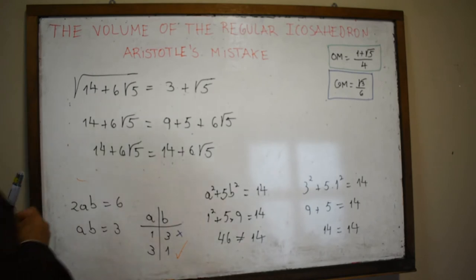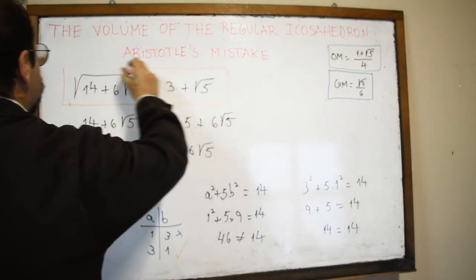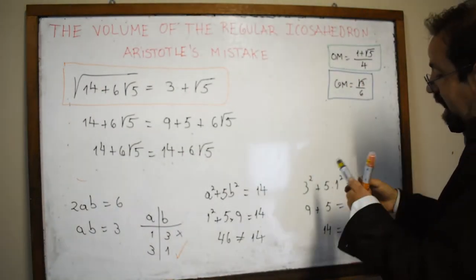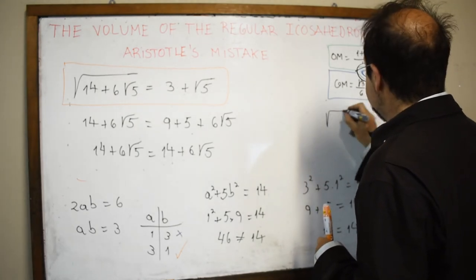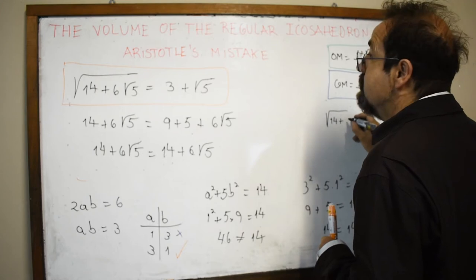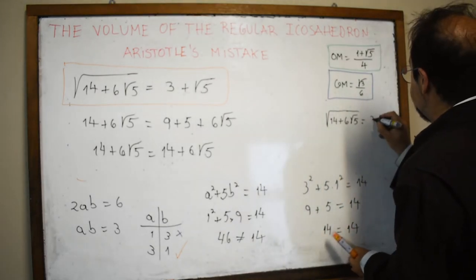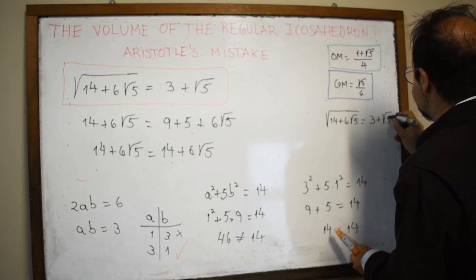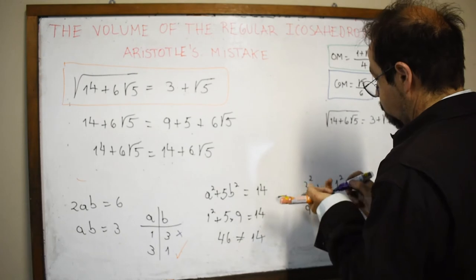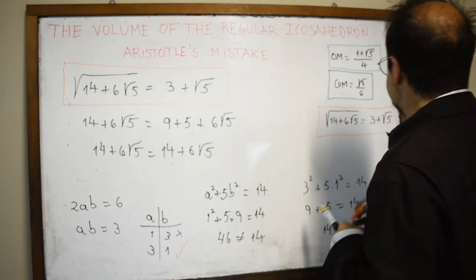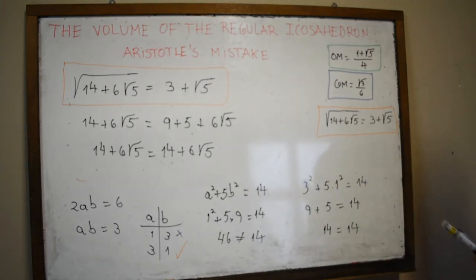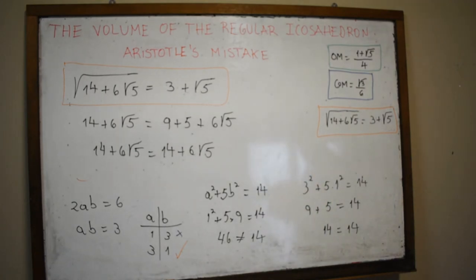That's a very important result we will use while calculating the volume. We can note that √(14 + 6√5) = 3 + √5. We are getting close to the final result. We need to find the height of the tetrahedron and also the area of the equilateral triangle base.